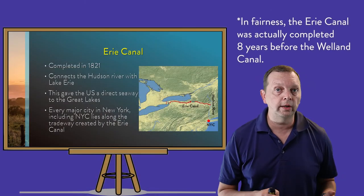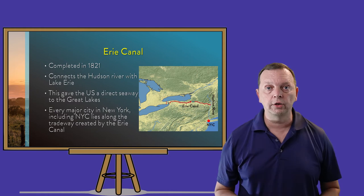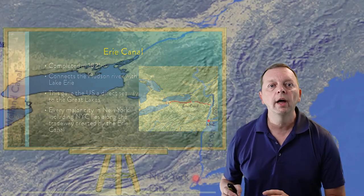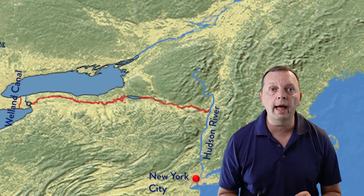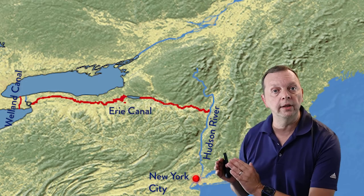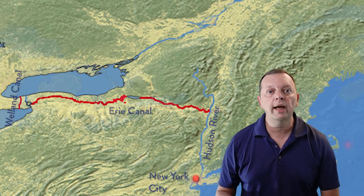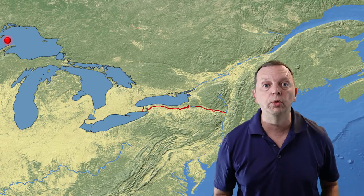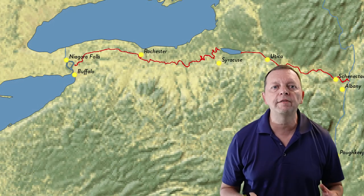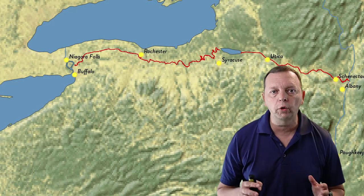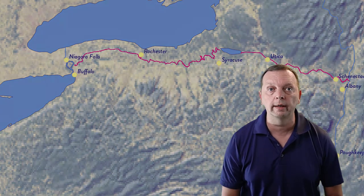The American answer to the St. Lawrence Seaway was the Erie Canal and the Hudson River. Entering the Atlantic at New York City, the Hudson River flows north into the state. In 1821, the Erie Canal was completed, connecting the Hudson River to Lake Erie. The Americans then had their own seaway from the Atlantic that could go through all the Great Lakes all the way west as far as Duluth, Minnesota. This vital seaway is one of the reasons why nearly all of New York's largest cities, including New York City, developed along this trade route.